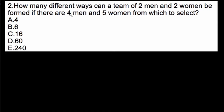So quickly we can use the formula here and then we'll talk about the intuition behind it. We have four men to choose from and we're choosing two of them, and we have five women and from them we're choosing two of them.